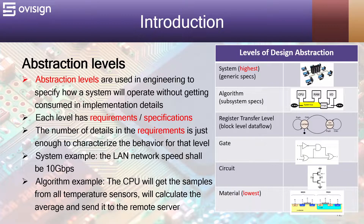Abstraction levels are used in engineering to specify how a system will operate without getting consumed in implementation details. Each level has requirements or specifications. The number of details and the requirements is just enough to characterize the behavior for that level.